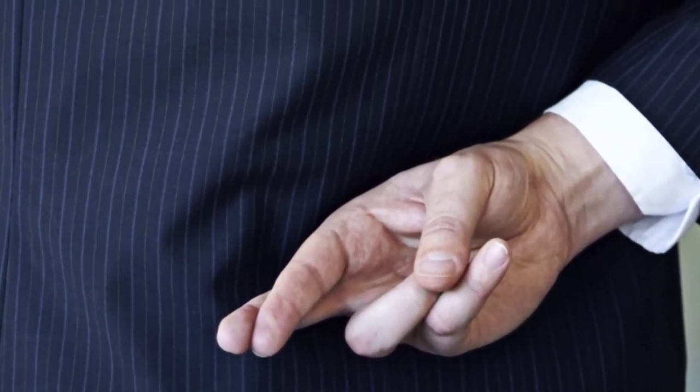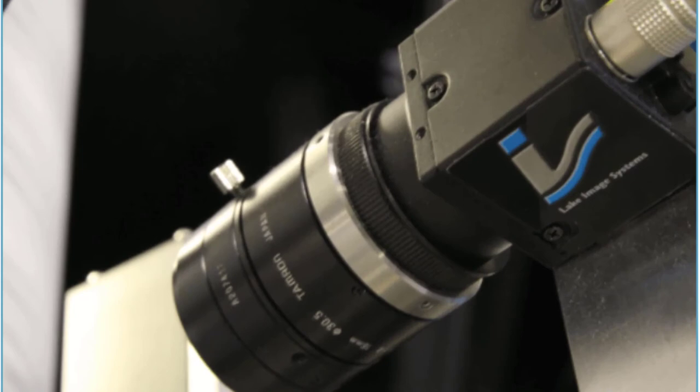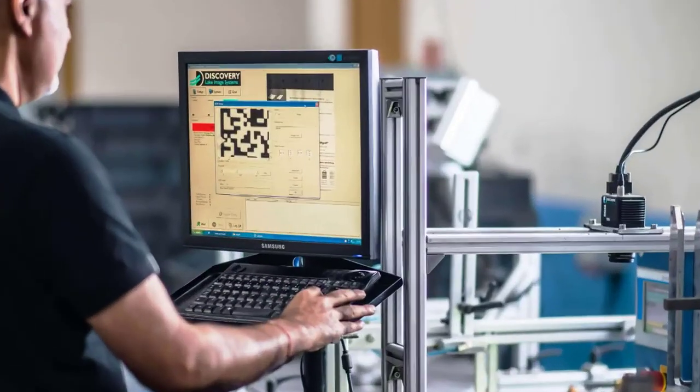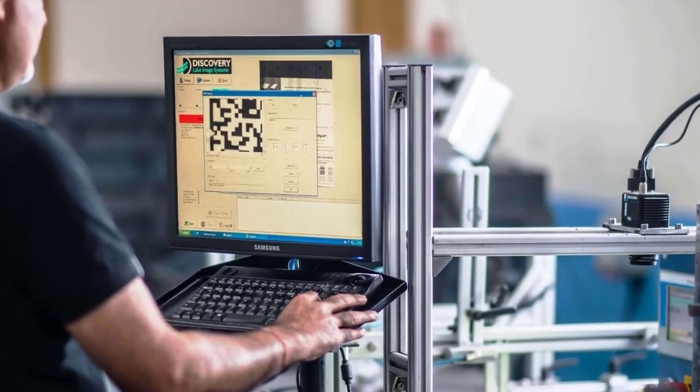reducing waste and mitigating potential risks. Lake Image Systems gives security printers the confidence and reassurance that their production processes are correct, error-free, trackable, and importantly, auditable according to their end-client's needs.